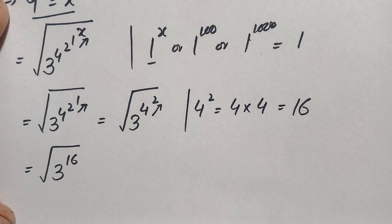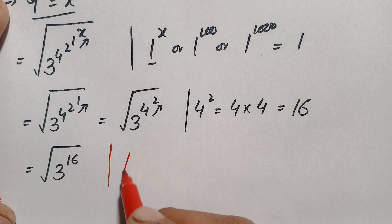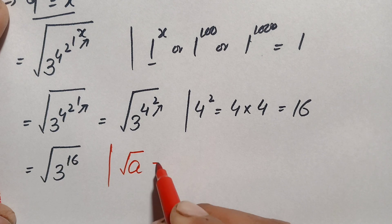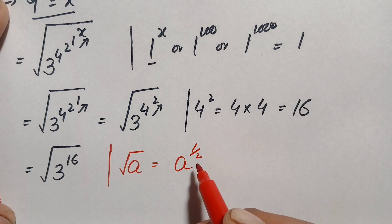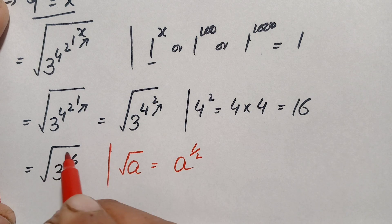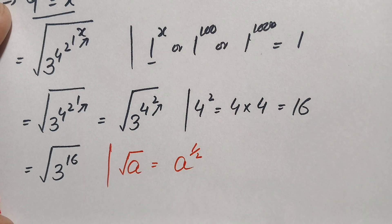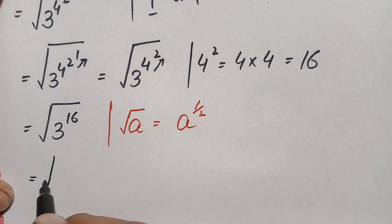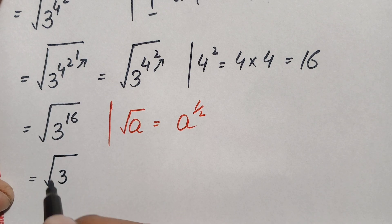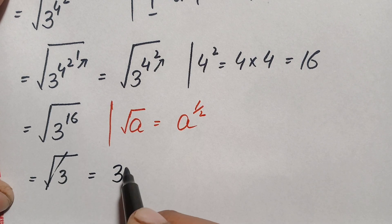Now we use a radical property and convert this to exponential form. The square root of any number a can be written in exponential form as a raised to the power 1 over 2, or one-half. So we change this radical to the exponential form, giving us 3 raised to the power 16, raised to the power 1 over 2.